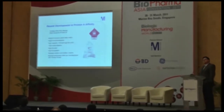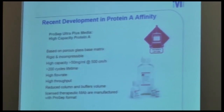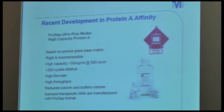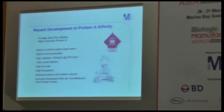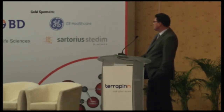We have been introduced to a new resin from another supplier earlier in the talk today. Here we would like to talk about recent developments in protein A affinity out of the Merck Millipore organization. Procep Ultra Plus Media, a high-capacity protein A resin based on controlled pore glass, is reusable for 200 cycles and is actually used for 200 cycles in commercial manufacture of lysine monoclonal antibodies. These materials can be used at high capacity of 50 mg and above, at process flow rates of 500 centimeters per hour, and reduce column footprint and buffer volume.